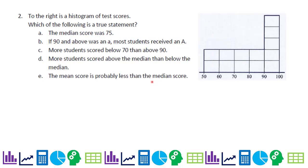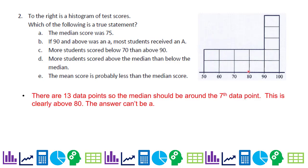To the right is a histogram of test scores. Which of the following is a true statement? The median score was 75. The median is going to be halfway through these data points. I've got eight here plus five there, there are 13 data points. The median should be at the seventh data point, which is clearly above 80, so the answer can't be A.